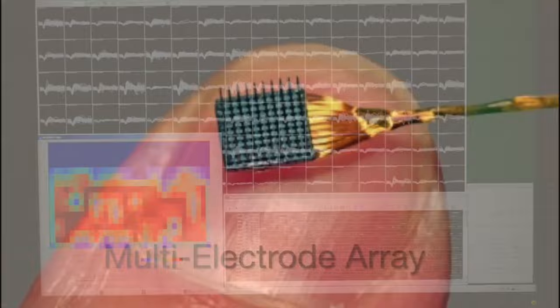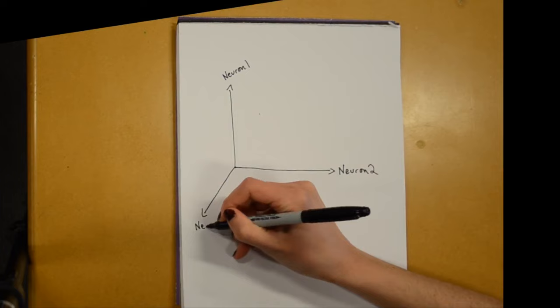Here, we've shown the activity of a single neuron, but with current technology, we can use an array of electrodes to record from hundreds of neurons simultaneously.